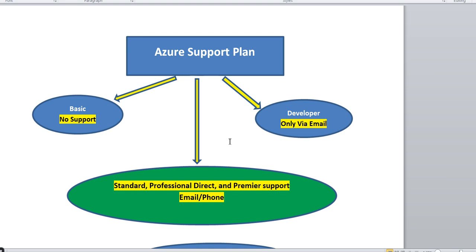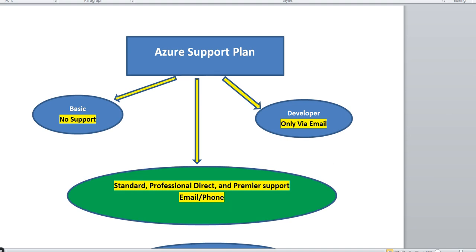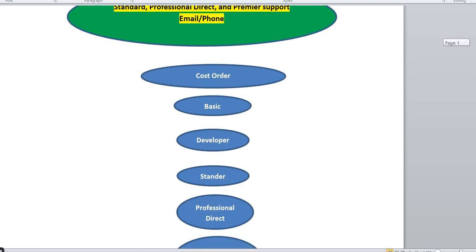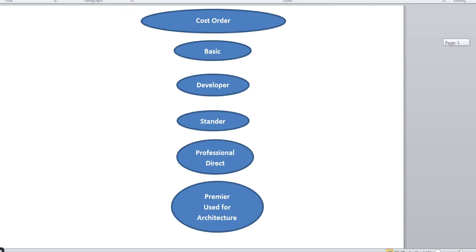Just keep this in mind from the flowchart: Basic has no support, Developer gets email support only, and Standard, Professional Direct, and Premier get both email and phone support.